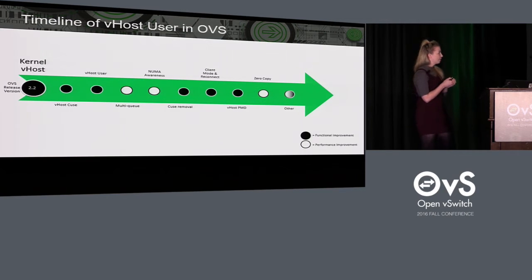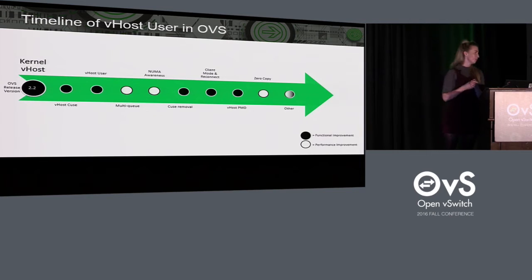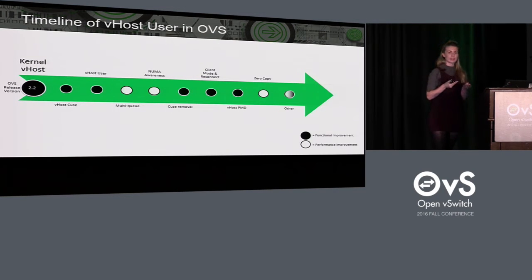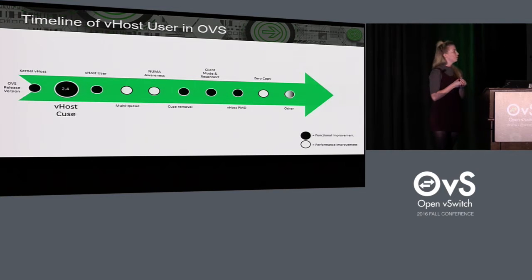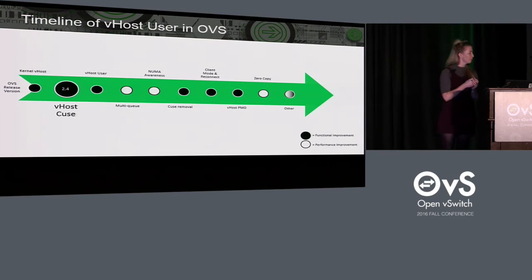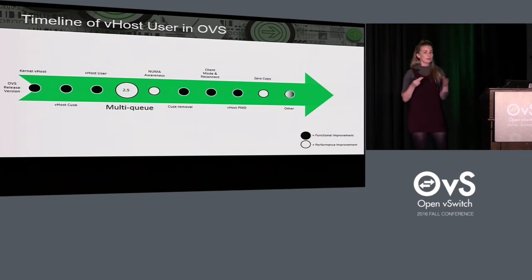Starting on the far left in version 2.2, this is in pre-vhost user times. Version 2.2 was when DPDK was first integrated into OVS. With that, you could use kernel vhost as a basic method for interfacing with a guest. That was the status quo for a few releases until version 2.4, which is when vhost queues was added — the less elegant but equally performant predecessor to vhost user, which was also added in 2.4. From 2.5 onwards, the community started adding improvements to vhost user, the first being multi-queue.